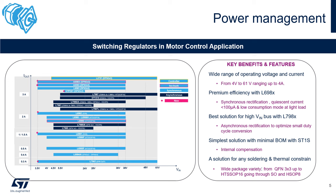If you need a solution for a high voltage bus, the L798X family could be the perfect choice, thanks to asynchronous rectification which brings a big benefit thanks to very small duty cycle recognition. Or if you just need a very simple solution with a minimal bill of materials, then you should choose the ST1S. All these products come with a wide package variety from QFN to SO to HSOP up to HTSSOP packages.